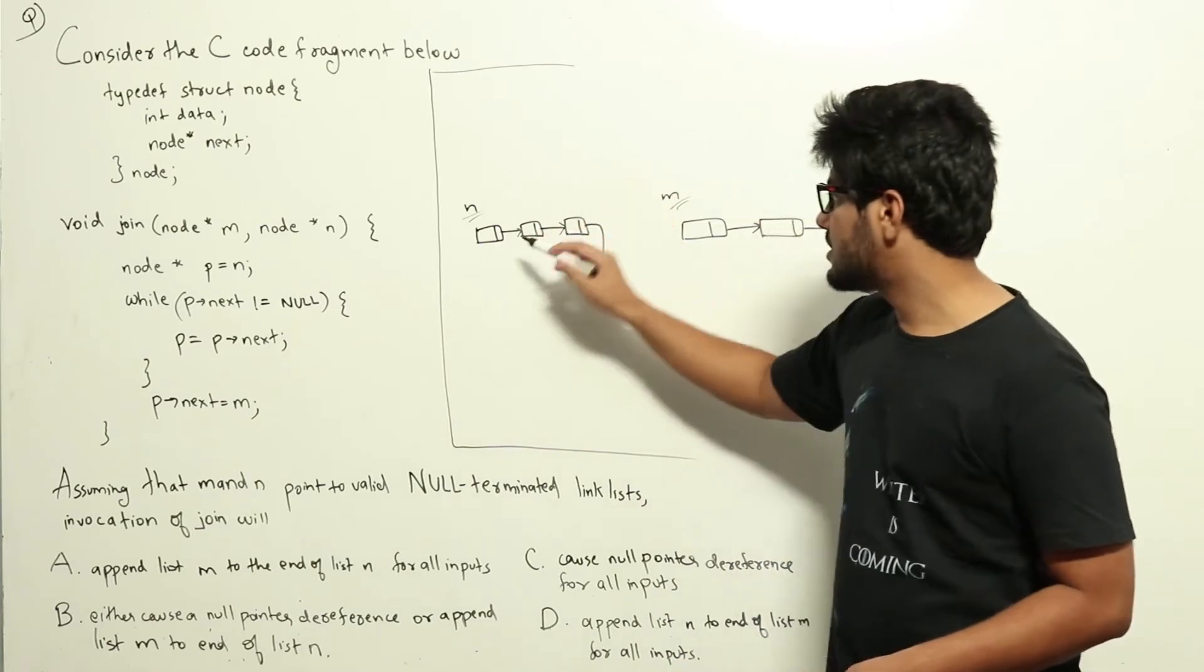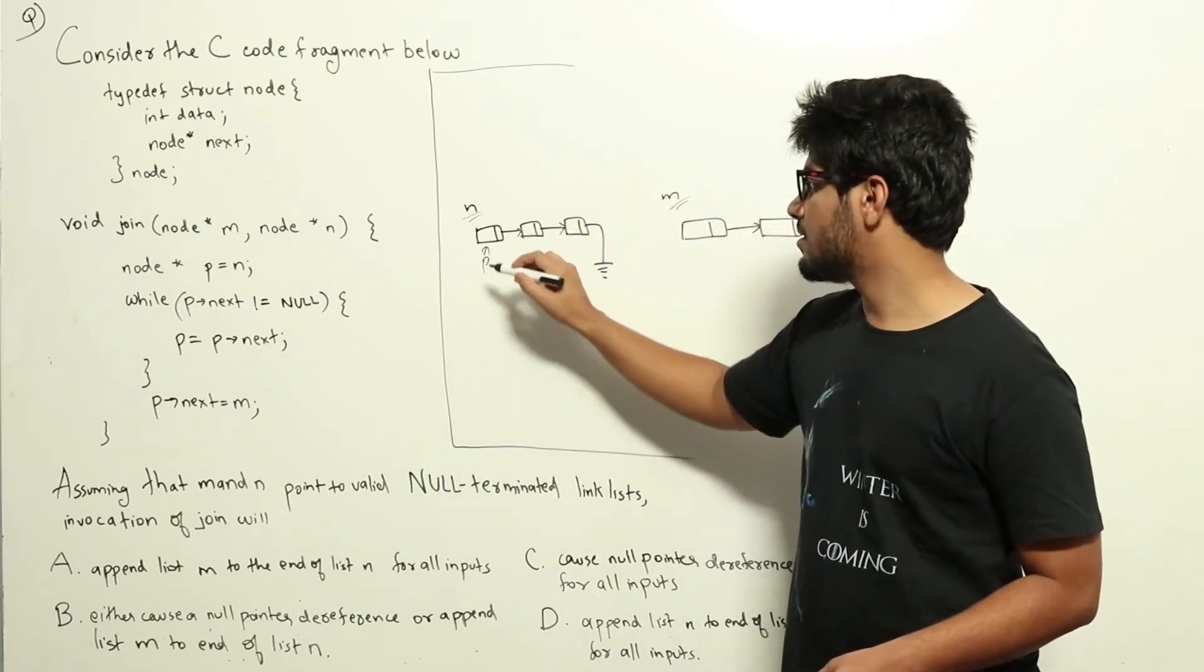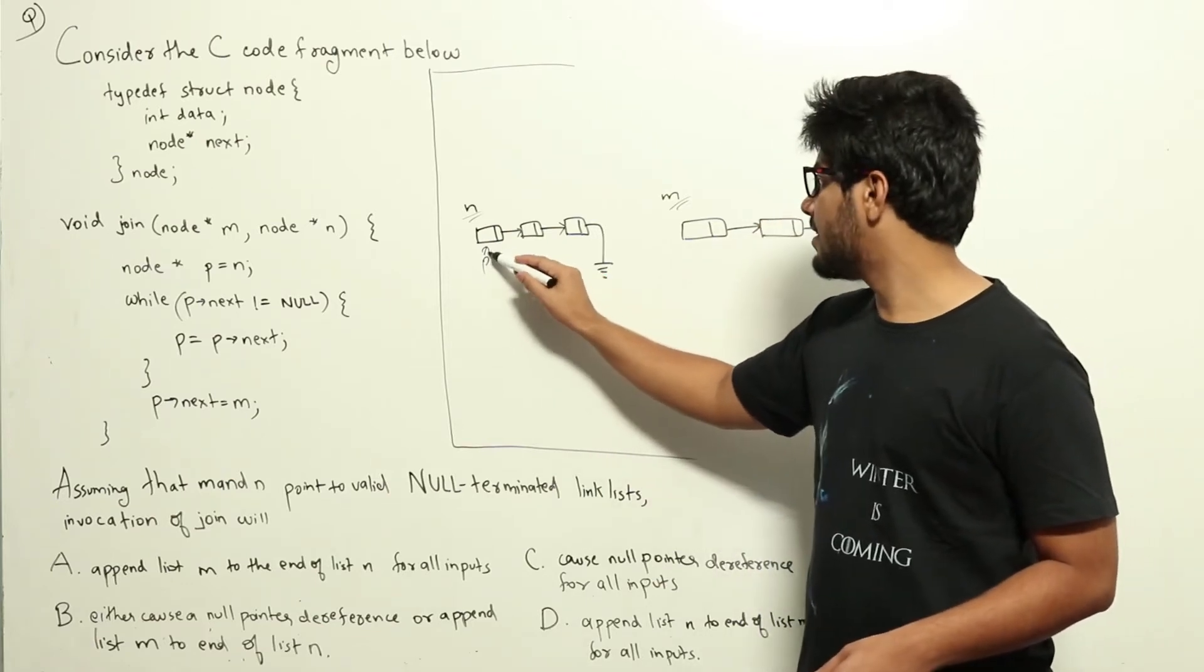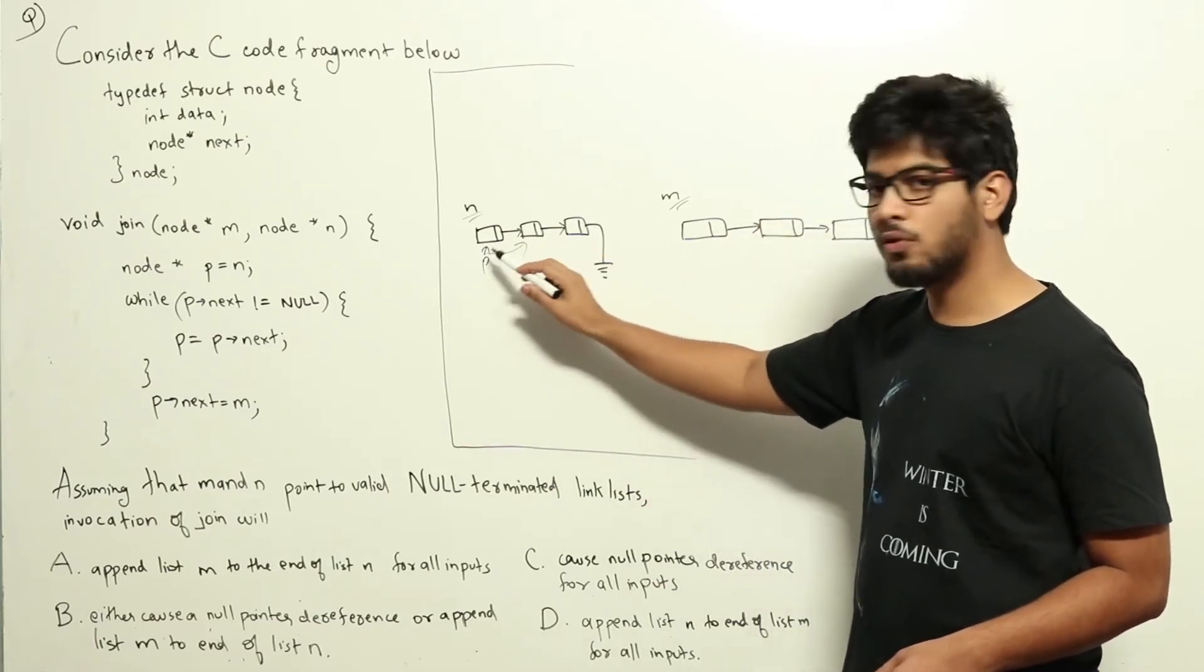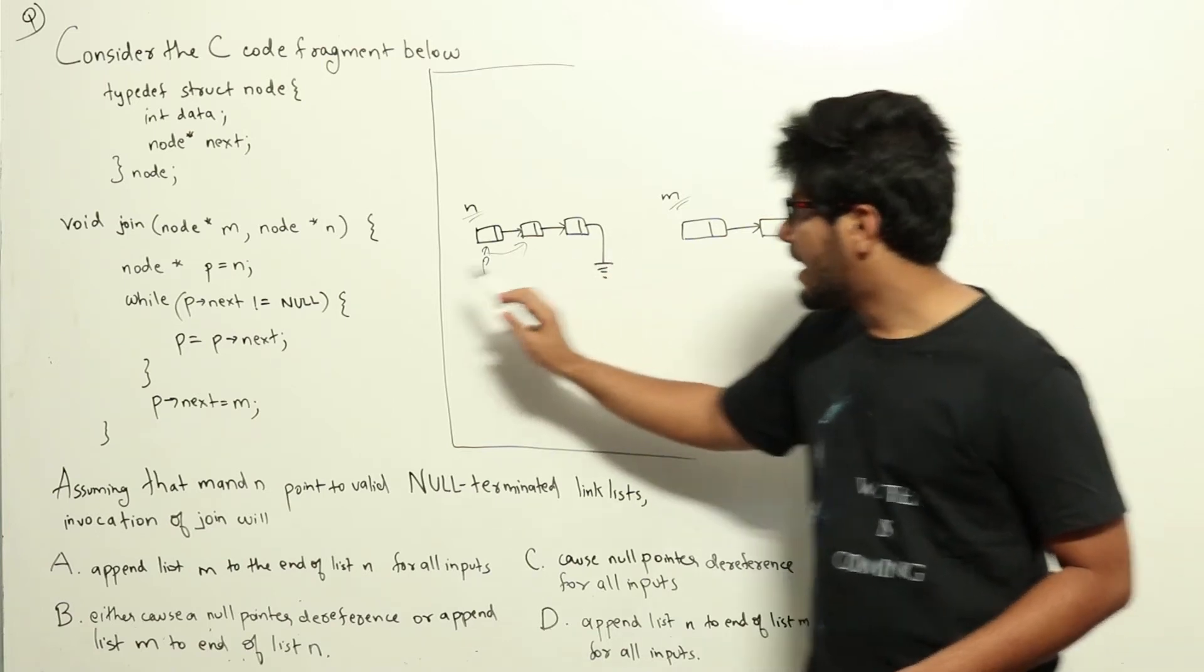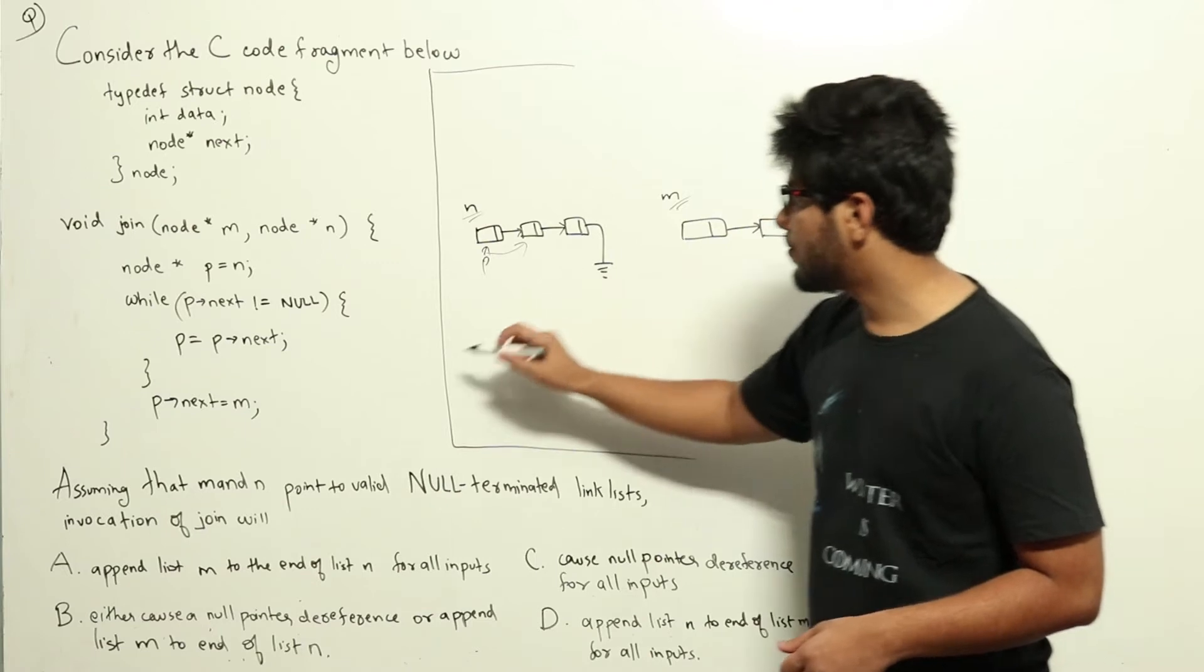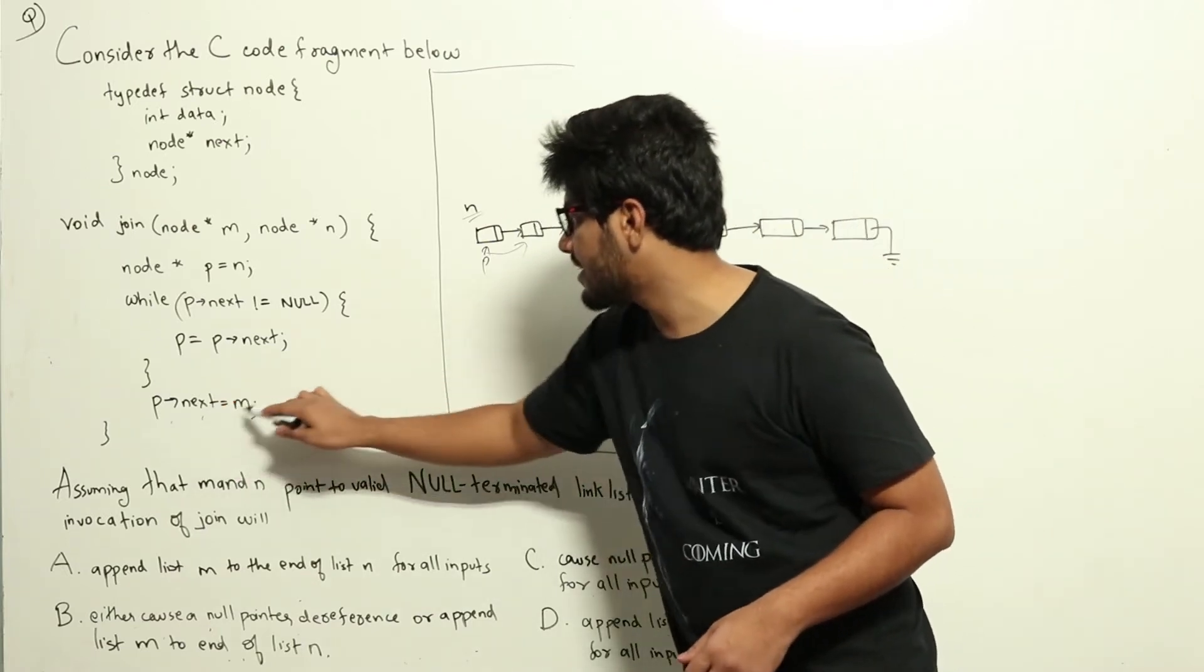Meaning we will initially assign P to the first node of N and then while the next of P is not null, we will be traversing P, we will be moving P to the next node like this until P hyphen next becomes null. And at that point what we will do is we will make P next equals to M.